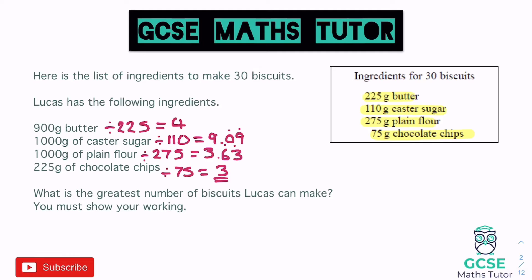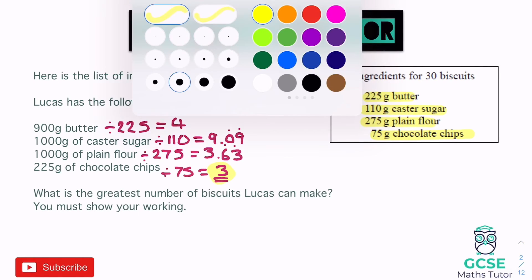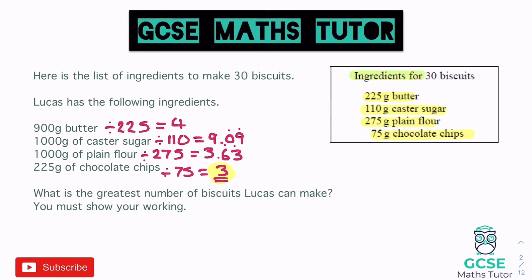We can only make three lots of the recipe, and we'll have some butter, sugar, and flour left over. The recipe is for 30 biscuits, so three lots of 30 equals 90 biscuits. That's the greatest number Lucas can make — 90 biscuits.